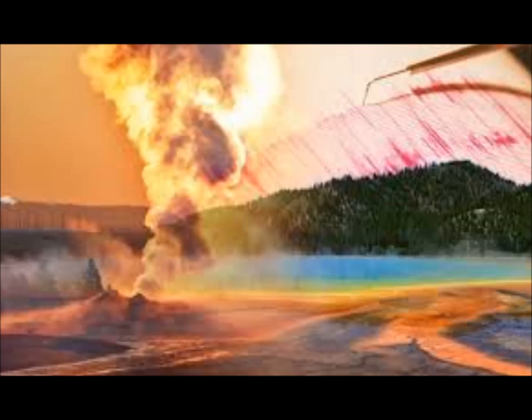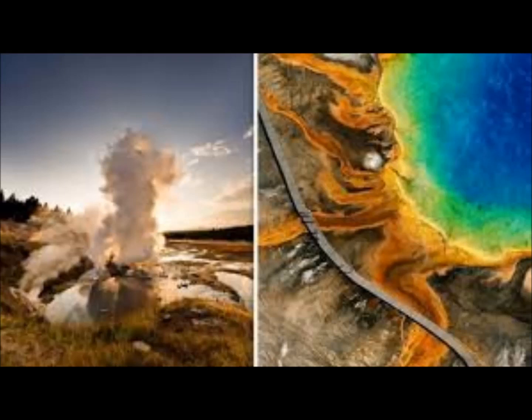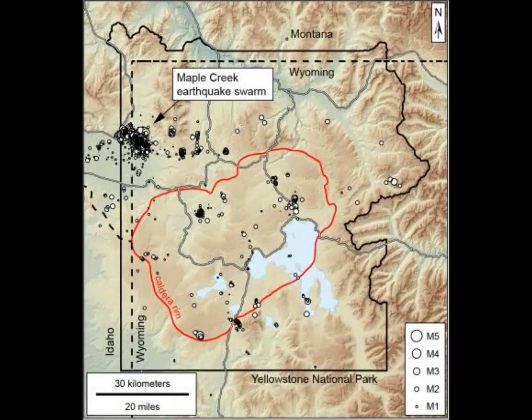Sometimes magma might be pushing up into the crust, opening a pathway by breaking rock in front of it. But most often, swarms are probably caused by fluids — dominantly water — interacting with faults. Unlike magma, water can move through small cracks in the subsurface, and this process speeds up dramatically when larger cracks are present. Earthquakes create those larger cracks, and fluids at high pressures can reduce the effective clamping force on a fault, causing it to slip.